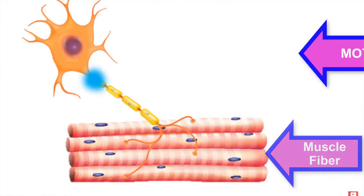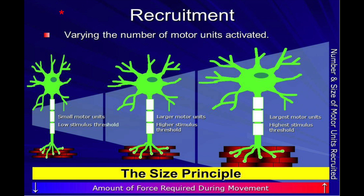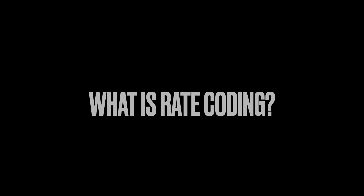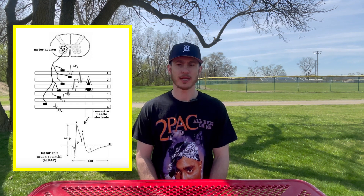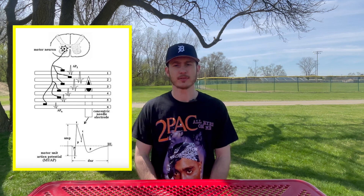The motor unit consists of a motor neuron and the muscle fibers it innervates — that connection between your brain and your muscles. Motor unit recruitment is the process by which different motor units are recruited to produce specific types and different levels of muscle contractions. Rate coding is the rate of action potential discharge to a muscle — basically how long it takes for that signal to travel from your brain to your muscles.